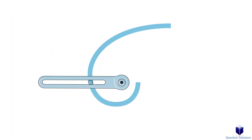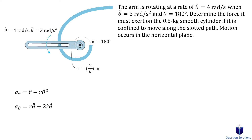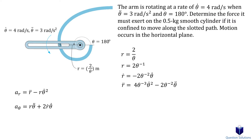Let's take a look at the next example. In this question, we need to find the force required to move the cylinder along the slotted path. As usual, our first step is to find the radial and transverse accelerations. Looking at the given information, we need the first and second derivatives of our radial coordinate. Remember, 1 over theta is the same as theta to the power of negative 1. The question says we need to figure out the force when theta equals 180 degrees, and we need to convert 180 degrees into radians before plugging it in.